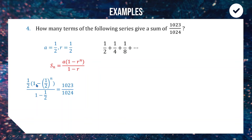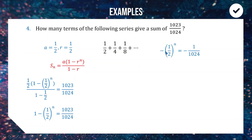We have ½ × (1 - (½)^n) / (1 - ½) = 1023/1024. The denominator 1 - ½ = ½, which cancels with the ½ in front, leaving 1 - (½)^n = 1023/1024. Subtracting 1 from both sides: -(½)^n = -1/1024. Multiplying both sides by -1: (½)^n = 1/1024. Since 1 to any power is 1, we care about the denominator — we need 2^n = 1024.